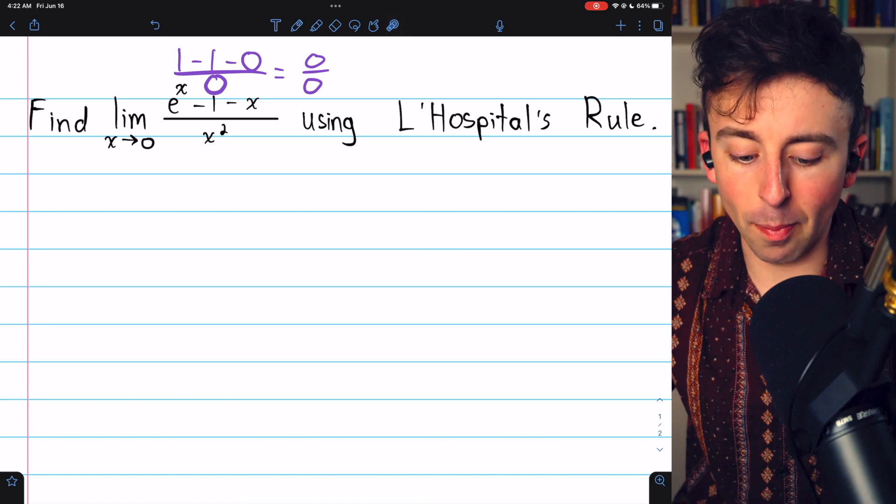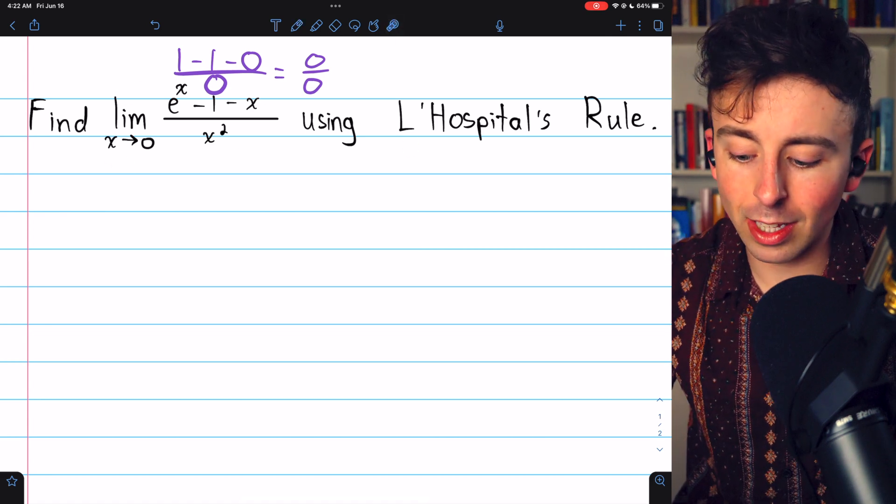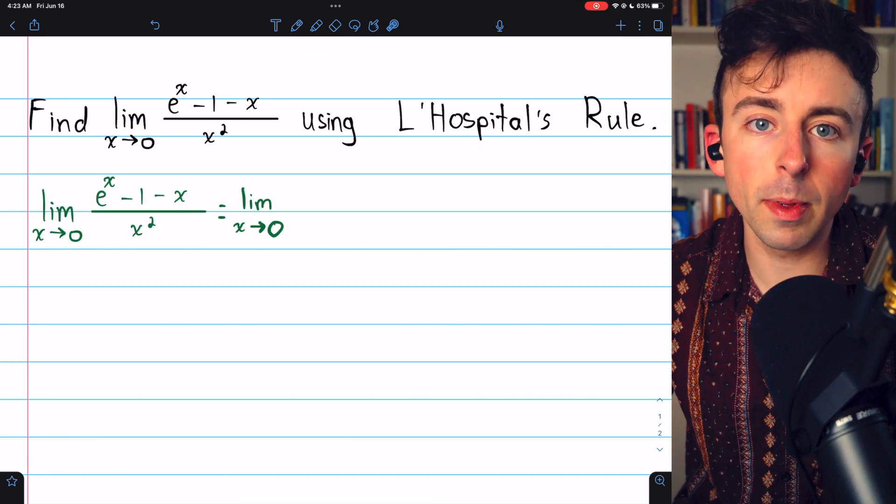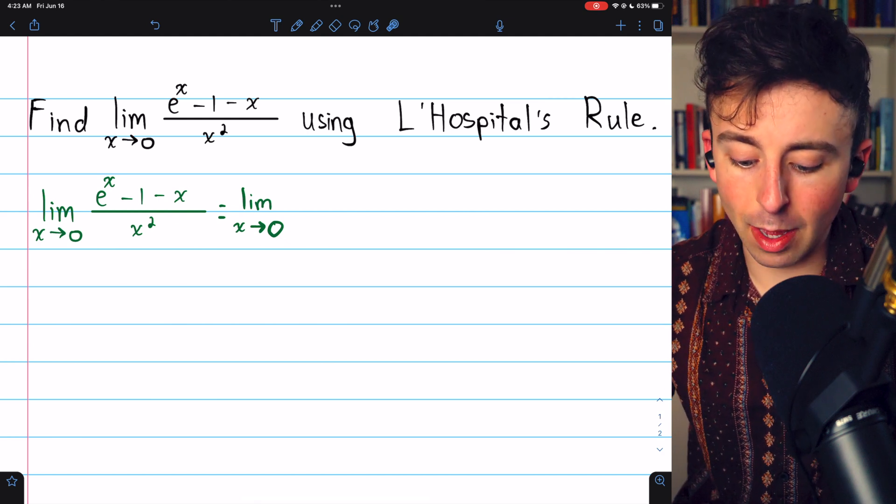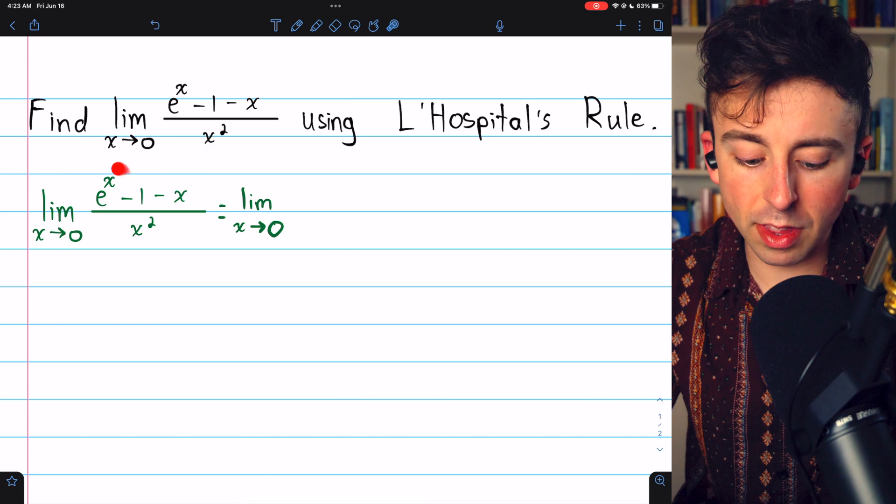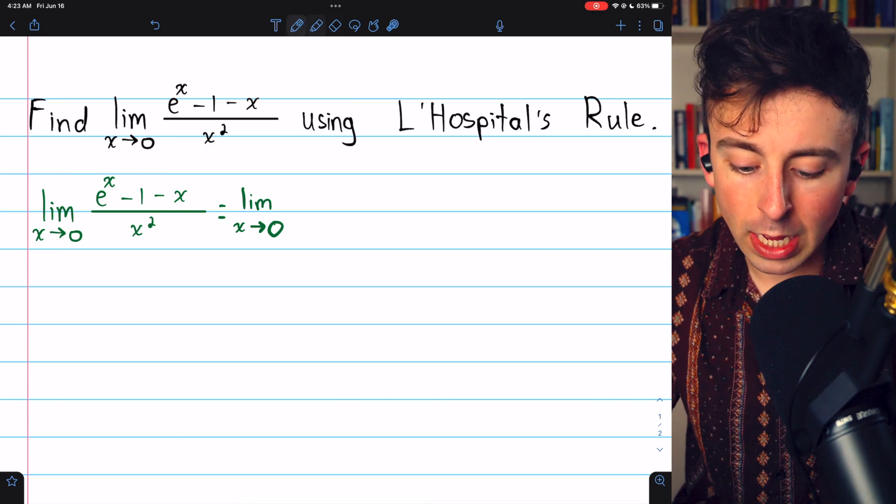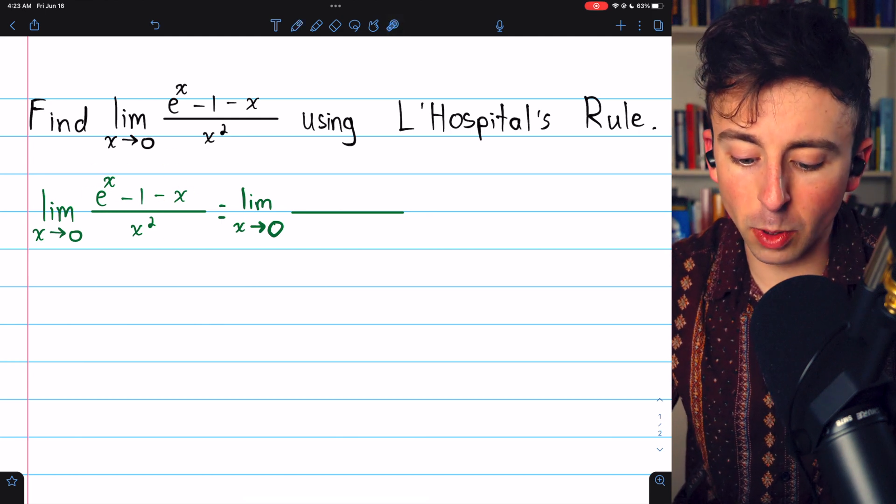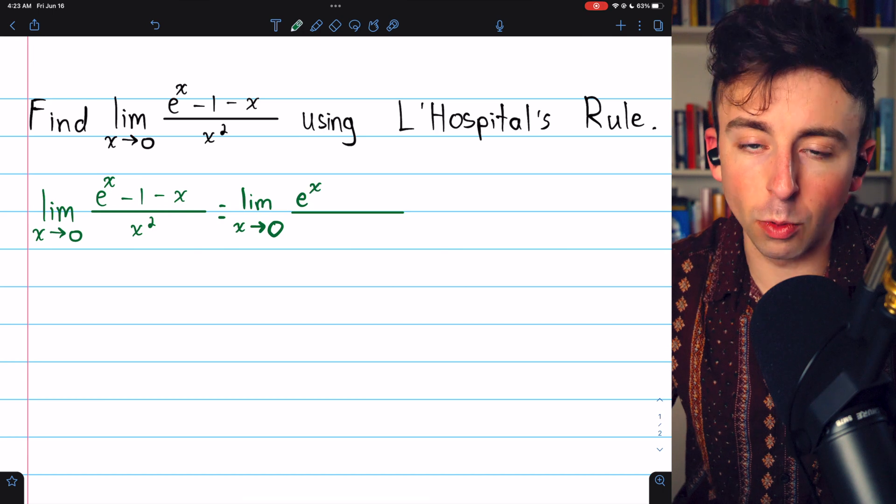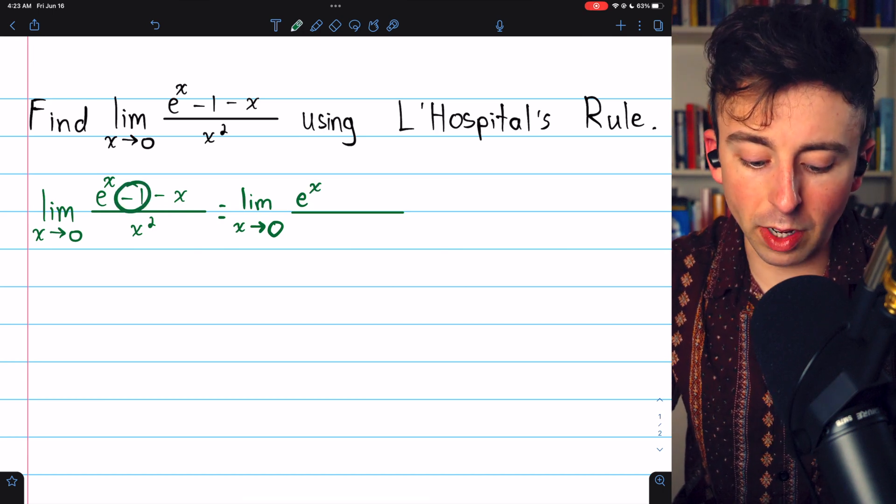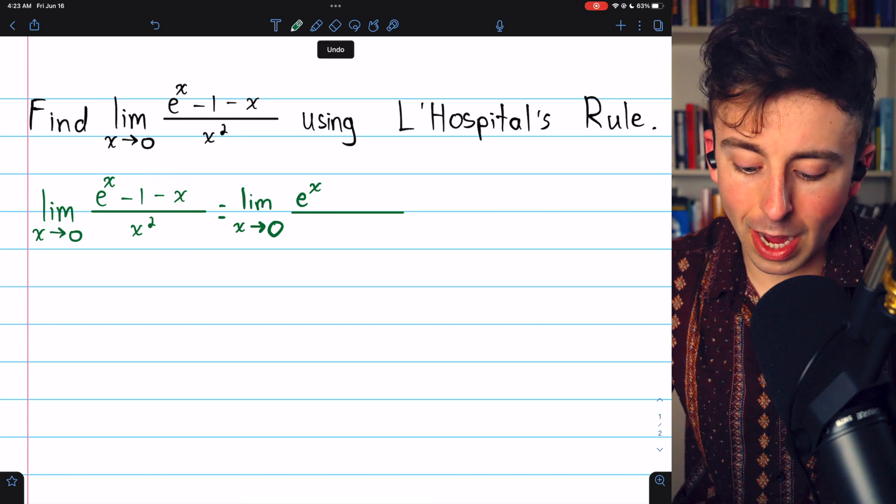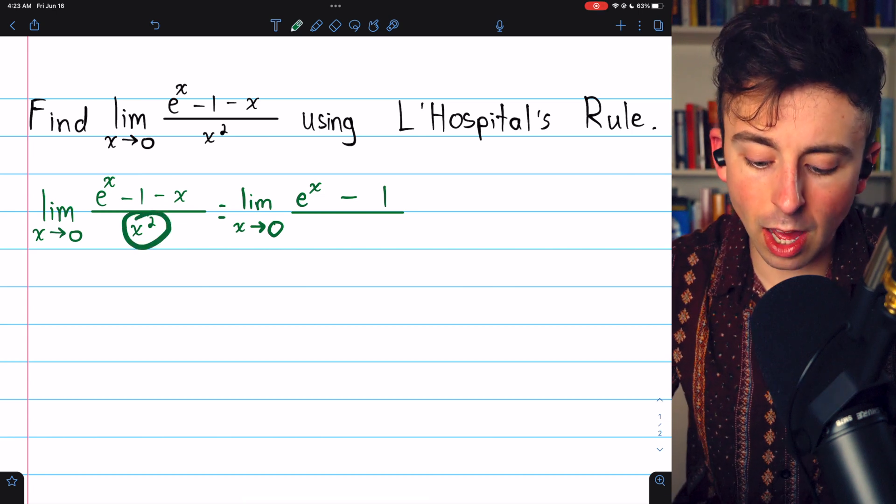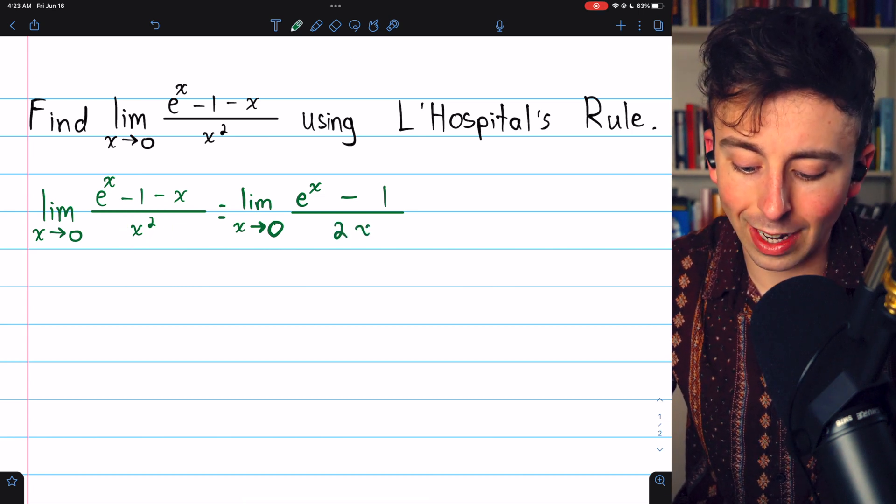So, we could apply L'Hospital's rule. Let's try evaluating this limit using L'Hospital's rule. L'Hospital's rule tells us that since this limit is in an indeterminate form, we can evaluate it by evaluating the limit of the quotient of the derivatives of the numerator and denominator. So, we have the limit as x approaches 0 of, we take the derivative of the numerator, which is going to be e to the x, because the derivative of e to the x is e to the x. The derivative of minus 1 is just 0. And then the derivative of minus x is minus 1. So, e to the x minus 1. And we need to divide by the derivative of the denominator, which is just 2x.